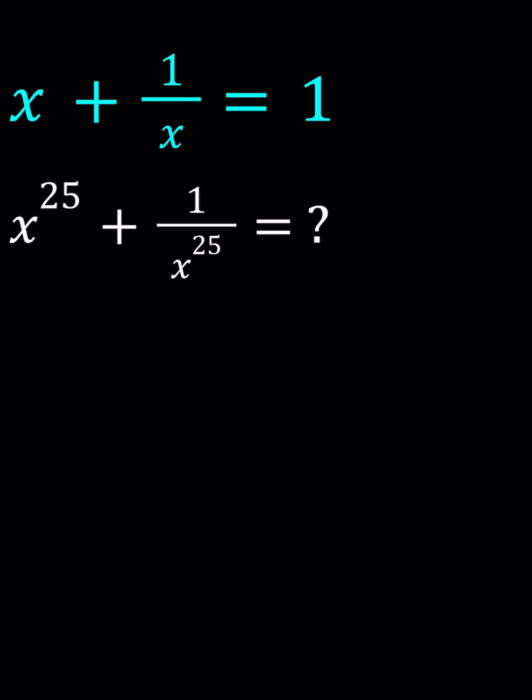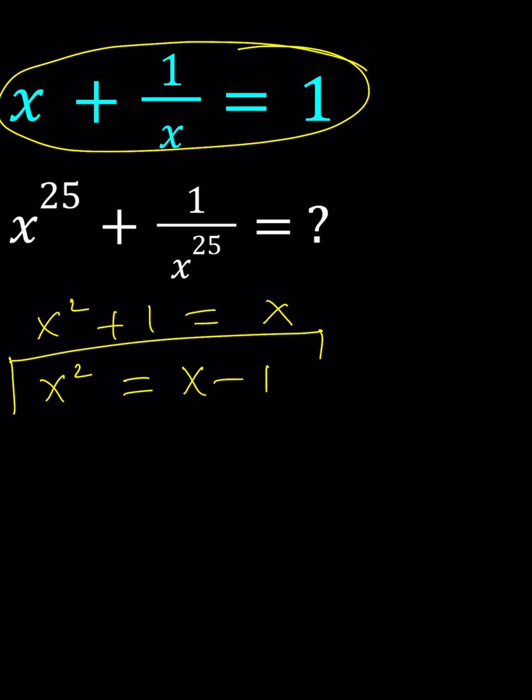Let's just go ahead and multiply everything by x and use the power of x squared. What does that mean? It means that for all powers that are coming up, you can replace x squared with x minus one.